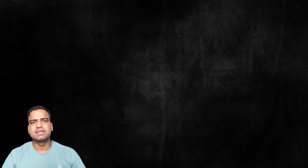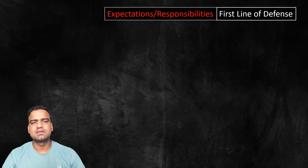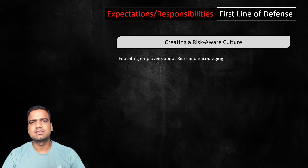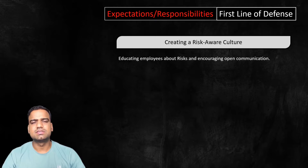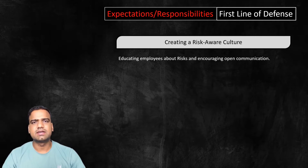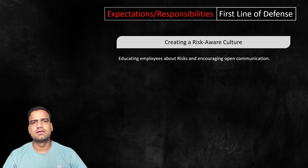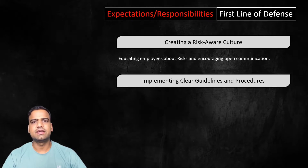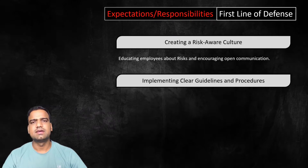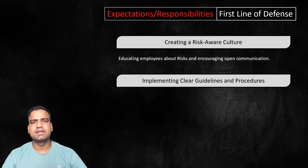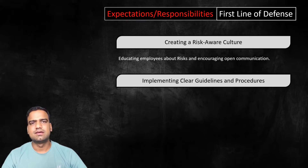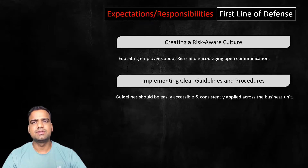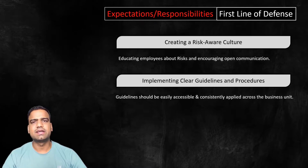What are the expectations and responsibilities from the first line of defense? Creating a risk-aware culture involves educating employees about potential risks, encouraging open communication about concerns, and providing training sessions on recognizing and reporting suspicious activities. Implementing clear guidelines and procedures includes defining roles and responsibilities for identifying, assessing, and addressing risks, especially in activities that drive corporate growth. These guidelines should be easily accessible and consistently applied across all business units, following standard protocols to mitigate risks.